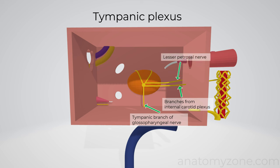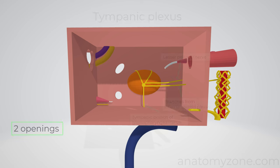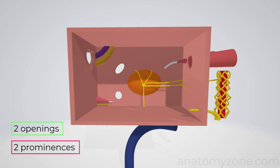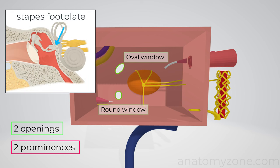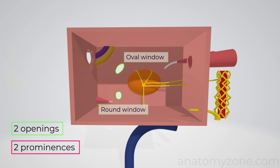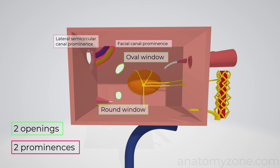Here you can see the lesser petrosal nerve, which is essentially a continuation of the tympanic nerve. The medial wall contains two openings and two prominences. The two openings include the oval window and the round window. The oval window lies posterosuperior to the cochlear promontory and serves as the attachment for the stapes footplate, which is the final point of attachment for the ossicular chain. The round window lies posteroinferior to the cochlear promontory. The two prominences include the facial canal prominence and the lateral semicircular canal prominence. The facial canal prominence is this bony ridge formed by the facial nerve canal. The lateral semicircular canal prominence sticks out laterally just above the facial nerve canal.